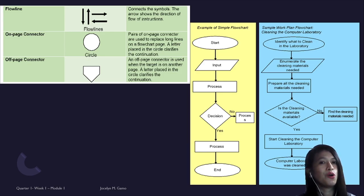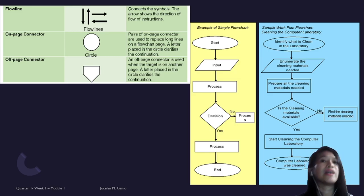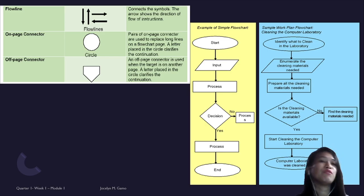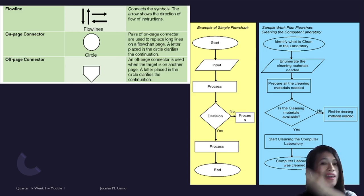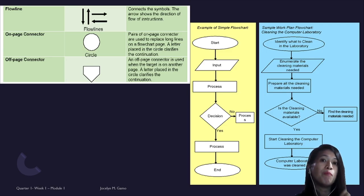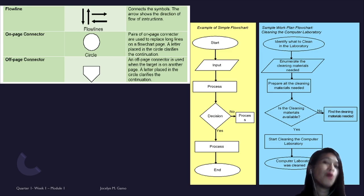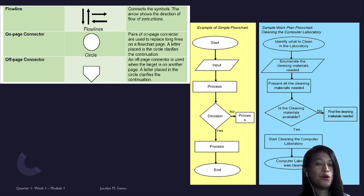Also, to connect the different elements of a flowchart, you use flow lines. Flow lines indicate the next thing that the computer will perform. We also have the connector, which is somewhat similar to a flow line. The difference is a connector can jump from one element to another — for instance, from the processing symbol directly to the terminator — unlike flow lines, which just show the arrow to the next step.